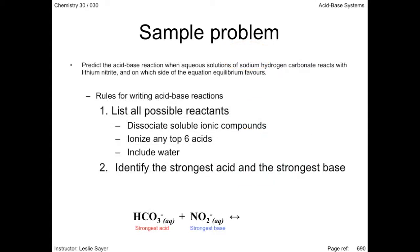These are now the reactants of the acid-base equation. Now, using the Bronsted-Lowry model of acids and bases, write out the conjugate acid-base products. This is done by removing a proton from the strongest acid, then attaching it to the strongest base.